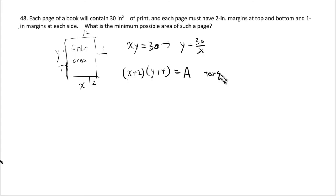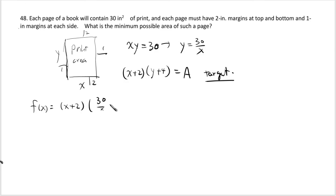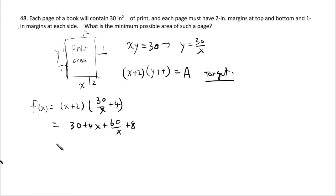Substitute y = 30/x into the target: A(x) = (x + 2)(30/x + 4). Multiply out: x·(30/x) = 30, x·4 = 4x, 2·(30/x) = 60/x, 2·4 = 8. So A(x) = 4x + 60/x + 8 + 30 = 4x + 60/x + 38.